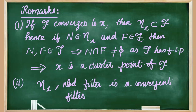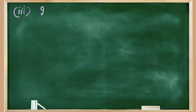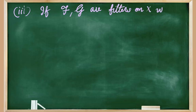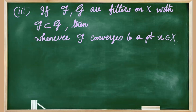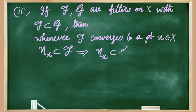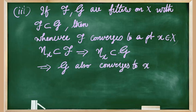From this observation we can see that the neighborhood filter is a convergent filter, as it is obvious that N(x) is a subset of this filter. Now suppose F and G are filters on X with F ⊆ G. Then whenever F converges to a point x, N(x) is a subset of F, which implies that N(x) is also contained in G, since F is a sub-family of G. So this implies that the filter G also converges to the same point x.